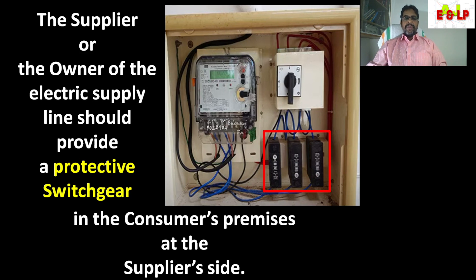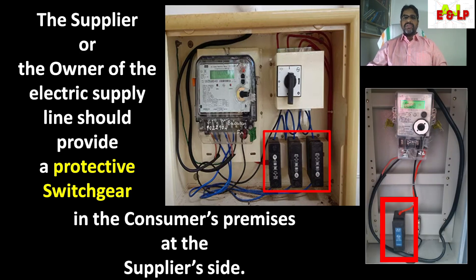I am explaining here about the consumer side and supplier side switchgears of an electric connection. On the meter, then the cut-out, which is highlighted here, then the switch of the unit. To the consumer side, what should be provided, and to the supplier side, what should be exactly provided?